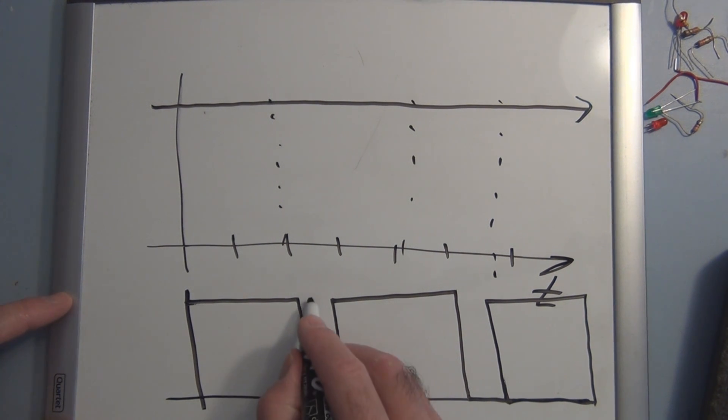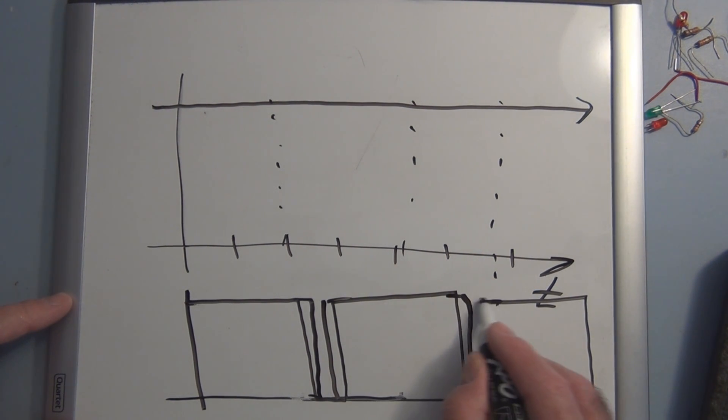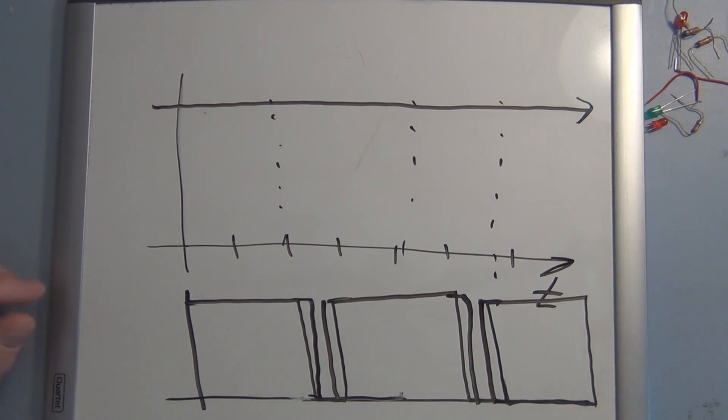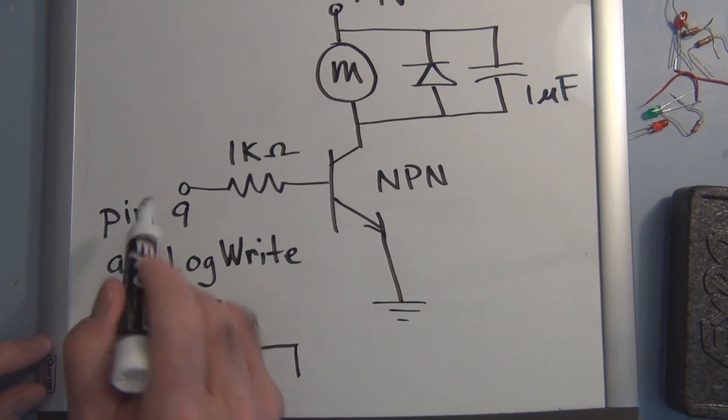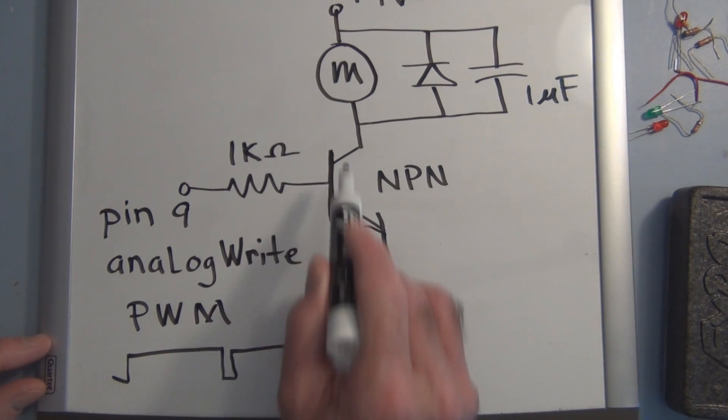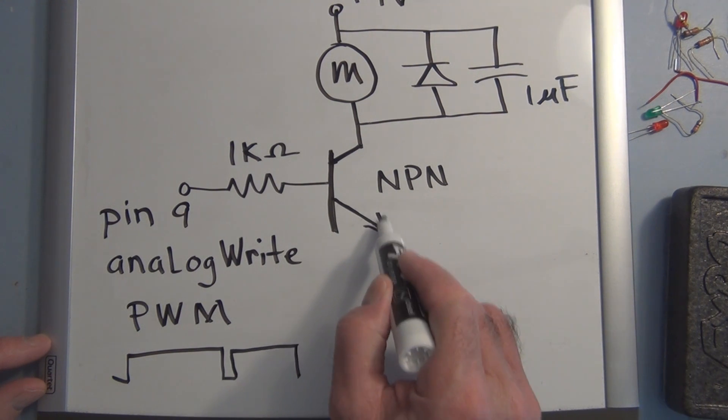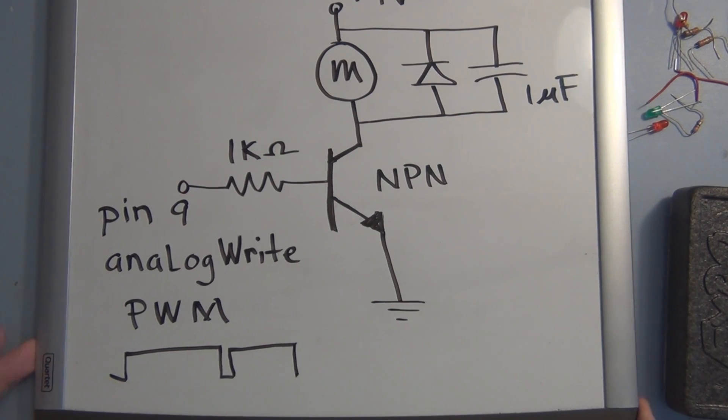And then you could then increase that some more. And that's what you're doing when you're doing the analog write and sending a certain value with the analog write function. You tell it what pin and you give it a number from 0 to 255. So that pulse width modulated signal is being sent to pin 9 through this 1k resistor to the base, which will then turn this transistor on even harder when you increase the pulse width modulation on pin 9. So let's go take a look at that sketch.